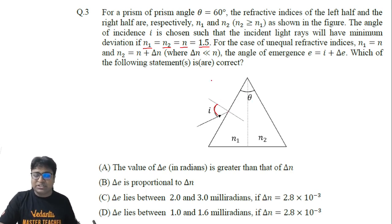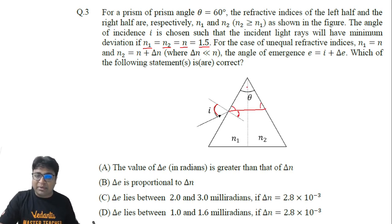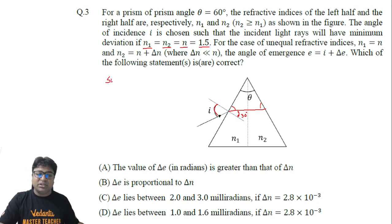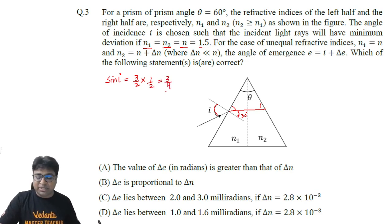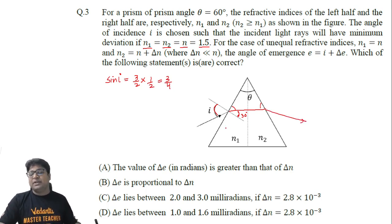At minimum deviation, the two angles become equal, and the angle of refraction at the first surface becomes equal to half the prism angle, which is 30 degrees. With that in mind, we write Snell's law: sin i = (3/2) × sin 30° = (3/2) × (1/2) = 3/4. So the value of sin i is 3/4.